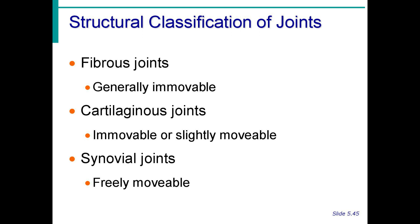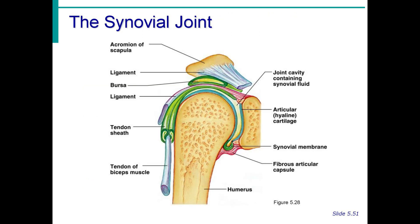Fibrous joints are bones united by fibrous tissue. An example is the sutures or lines in the skull that connect the cranial bones. Cartilaginous joints are made up of cartilage — examples include the pubic symphysis near the pelvic girdle and the intervertebral joints that hold the vertebral column. Synovial joints are found where articulating bones are separated by a cavity that contains synovial fluid.